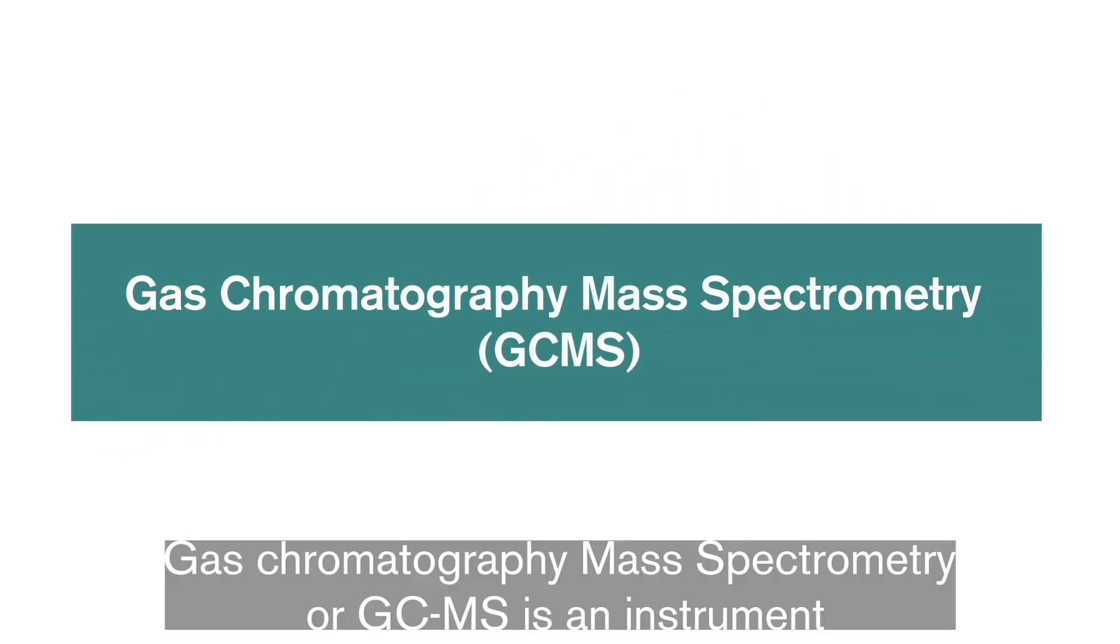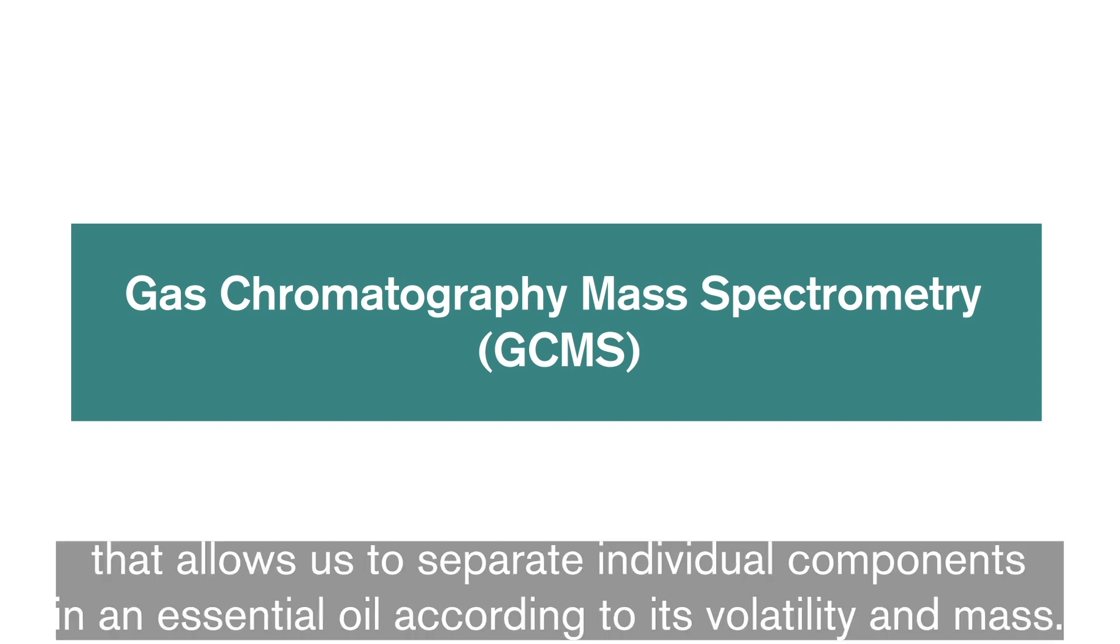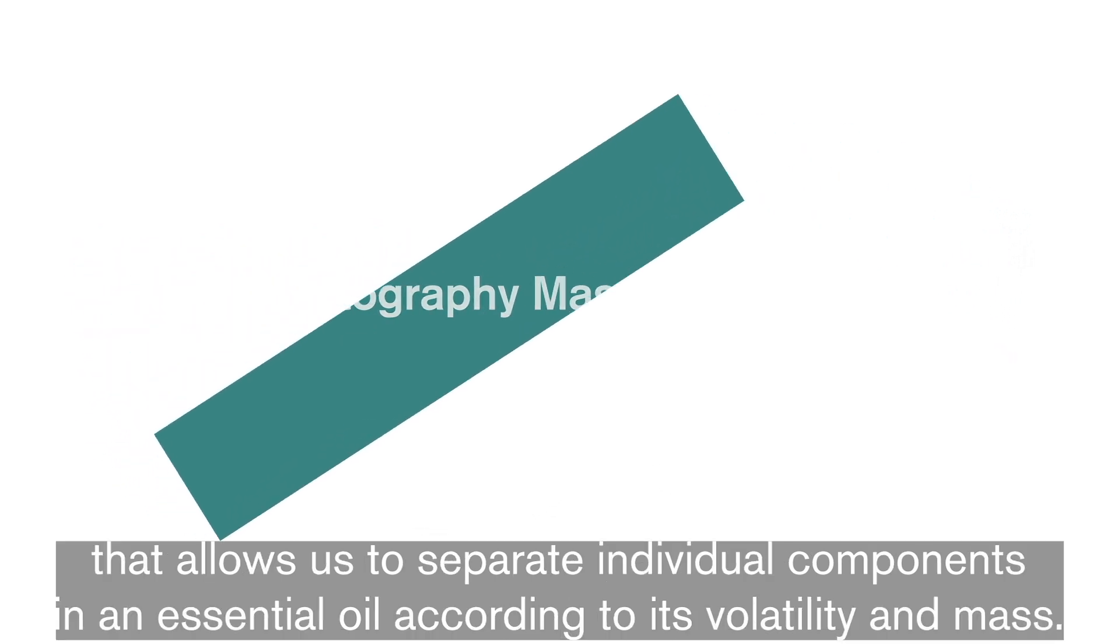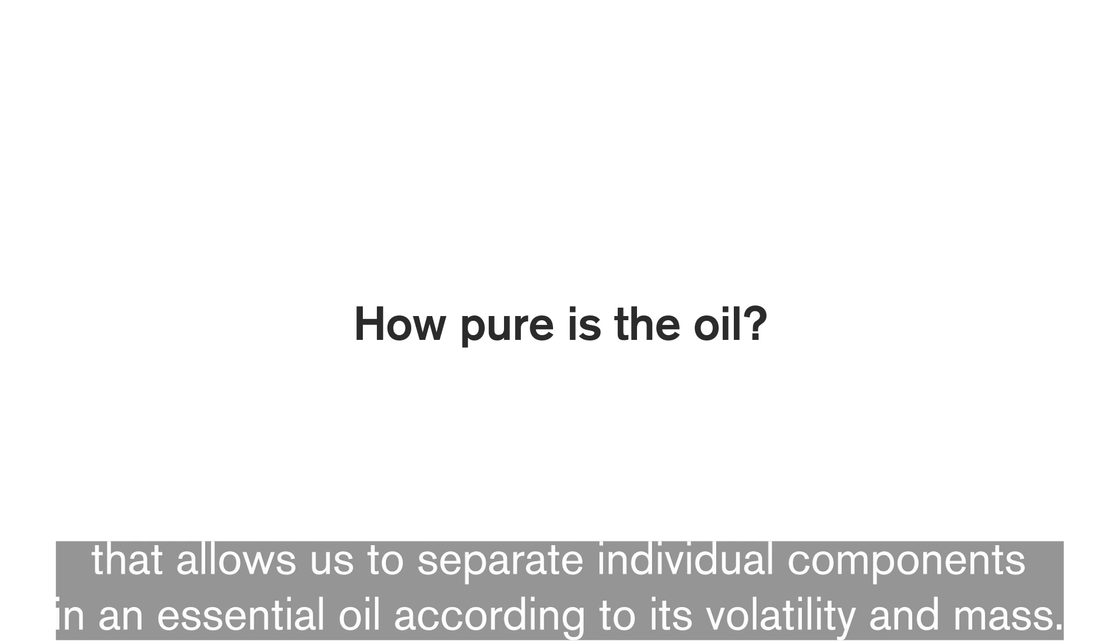Gas chromatography mass spectrometry, or GC-MS, is an instrument that allows us to separate individual components in an essential oil according to its volatility and mass.